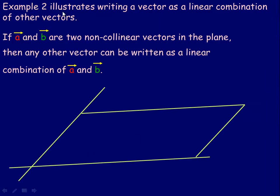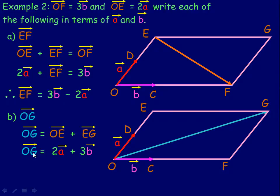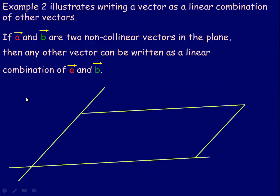That example illustrates writing a vector as a linear combination of other vectors. OG equals twice a plus 3b, and EF equals 3b minus 2a — those are the linear combinations of a and b that give each vector. Now, if a and b are two non-collinear vectors in a plane, then any other vector parallel to that plane can be written as a linear combination of a and b.